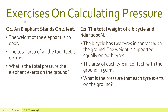Let us do some exercises on calculating pressure. Question 1: An elephant stands on 4 feet. The weight of the elephant is 50,000 Newton. The total area of all 4 feet is 0.4 m². What is the total pressure the elephant exerts on the ground? Question 2: The total weight of a bicycle and the rider is 2,000 Newton. The bicycle has two tires in contact with the ground. The weight is supported equally on both tires. The area of each tire in contact with the ground is 5 cm². What is the pressure that each tire exerts on the ground?